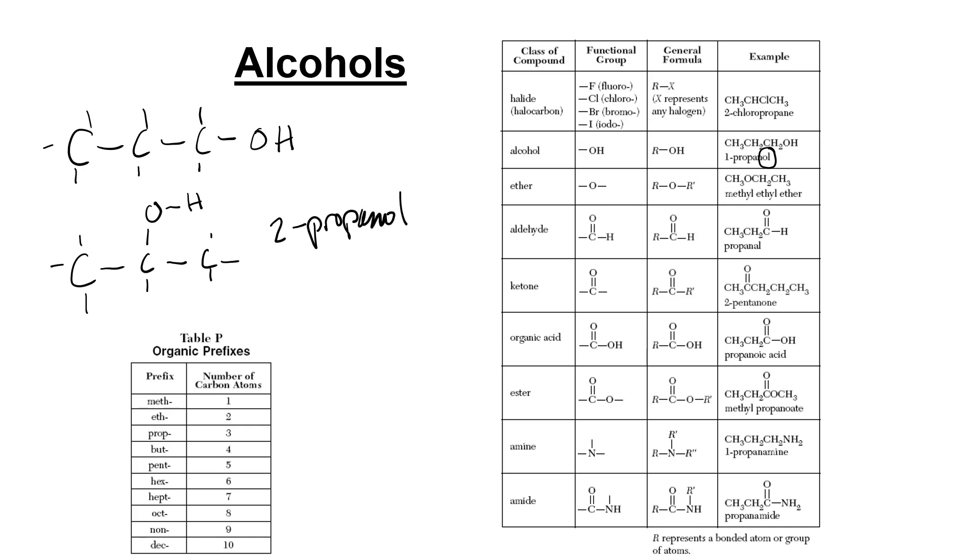So this one is called 2-propanol. And this actually has another name which is called isopropyl alcohol. And this is the type of alcohol that is rubbing alcohol. The drinking alcohol is ethanol. So if I were to draw ethanol, that would be this, because it's got the ethyl backbone, and then we put the little functional group off of it. That's the alcohols.